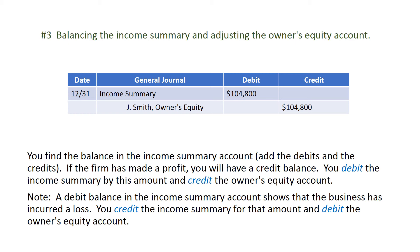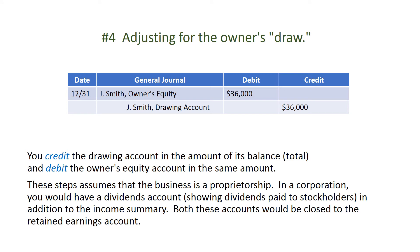Number three: balancing the income summary and adjusting the owner's equity account. You find the balance in the income summary account by adding the debits and the credits. If the firm has made a profit, you will have a credit balance — you debit the income summary by this amount and credit the owner's equity account. Note: a debit balance in the income summary account shows that the business has incurred a loss; you credit the income summary for that amount and debit the owner's equity account. Number four: adjusting for the owner's draw. You credit the drawing account in the amount of its balance total and debit the owner's equity account in the same amount.